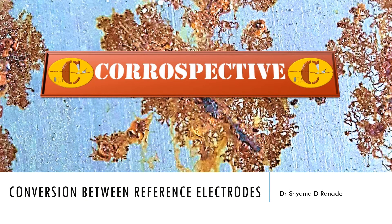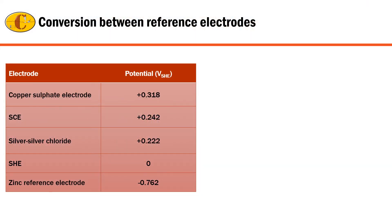Hello everyone, welcome to a new video on how to convert the potentials between the different reference electrodes. Each of the reference electrodes has different potentials with respect to SHE, and sometimes there is a need to convert between the different electrodes. For convenience, someone may have used a zinc reference electrode for a temporary measurement and now needs to convert it to the copper-copper sulfate electrode, or results from a lab may be in calomel and need to be converted to copper-copper sulfate or silver-silver chloride.